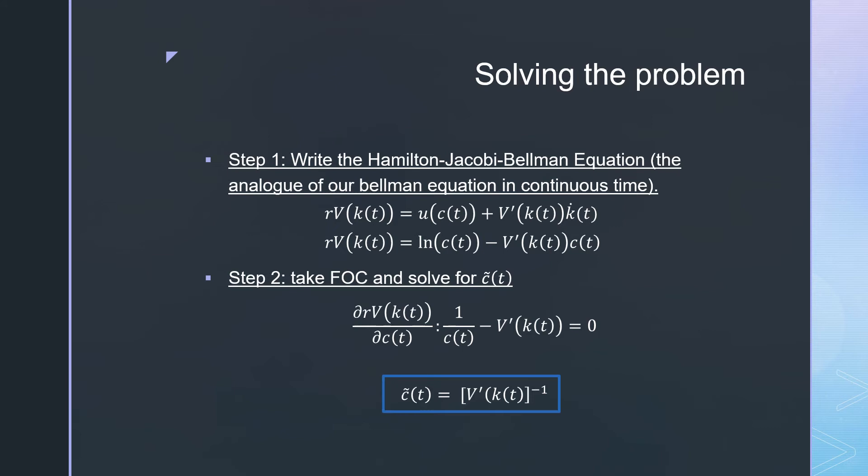Moving to step two, we solve for this intermediate policy function c̃. If we take the derivative with respect to c, we get the following results. With a little algebra, our policy function is defined by the inverse of the derivative of our value function, [V'(kt)]^(-1).